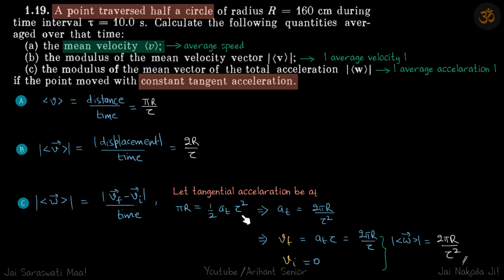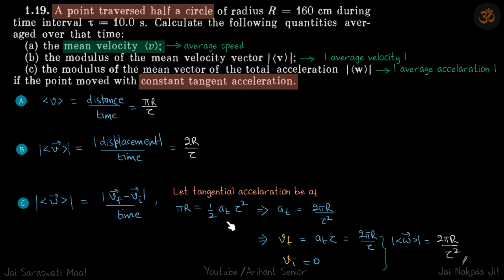The point travels a distance of πr along the circular path in time τ, with initial velocity zero. The distance along the circular path equals ½·a_t·τ², because we are taking acceleration tangential to the path. So πr = ½·a_t·τ², from which we get the value of a_t.